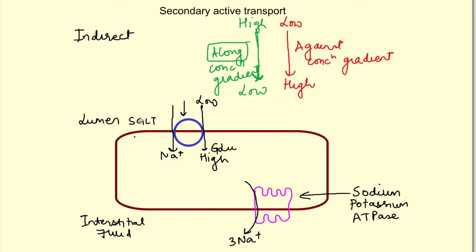The sodium-glucose transporter — SGLT — is present in the small intestine and in nephrons in the kidney. The energy stored in the sodium gradient from outside to inside is used to transport glucose against its concentration gradient.